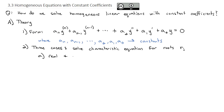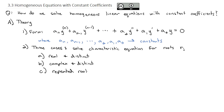The first case is where we get real and distinct roots — maybe r equals 2 and negative 7, they're real and distinct. The second is complex and distinct — maybe they're 2 plus or minus 3i. And the other option is repeated roots, which could be real repeated roots or complex repeated roots. We're going to look at all three of these cases individually in various examples.